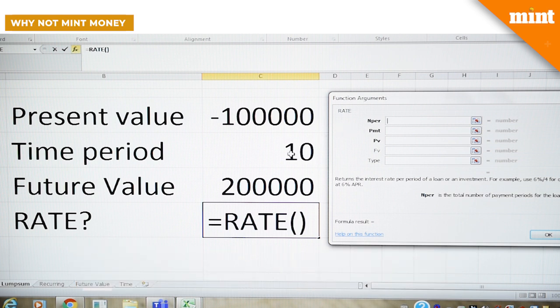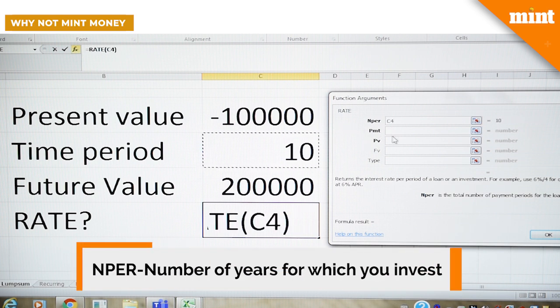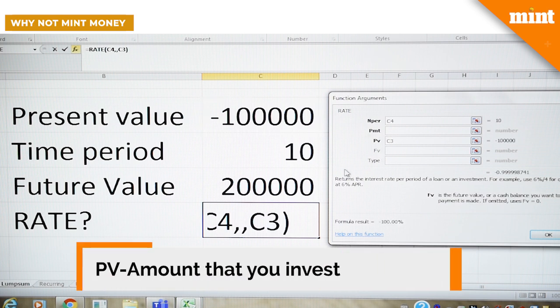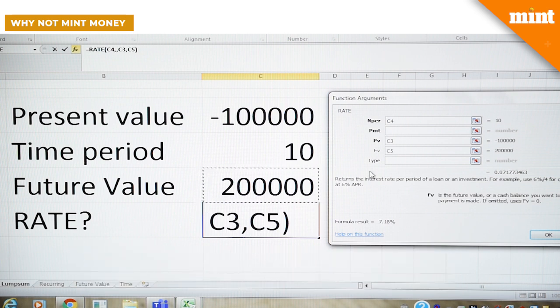NPER is the time which is 10. PV is the present value which is 1 lakh, and FV is the future value which is the amount of money that you will get at the end of 10 years.